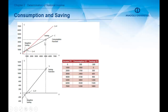The difference between income and consumption also means savings. For example, here we can see some income levels and for these income levels we have some consumption levels. The difference between income and consumption shows savings, and the saving function shows this relationship.